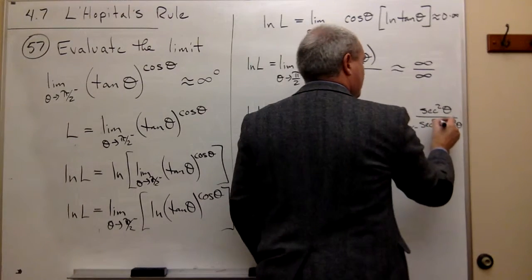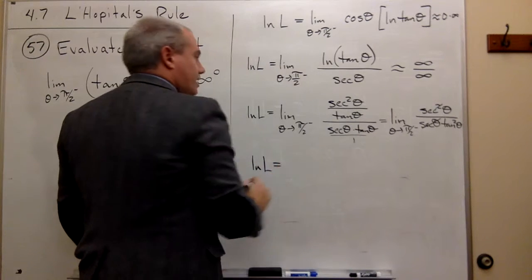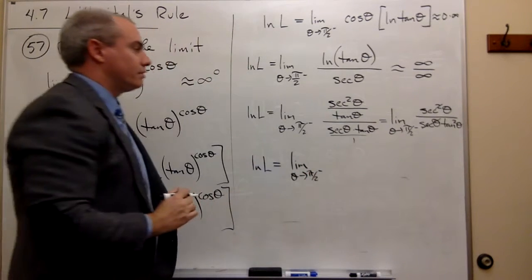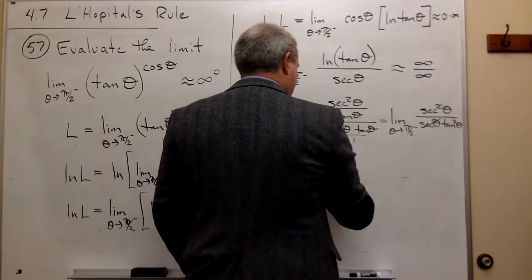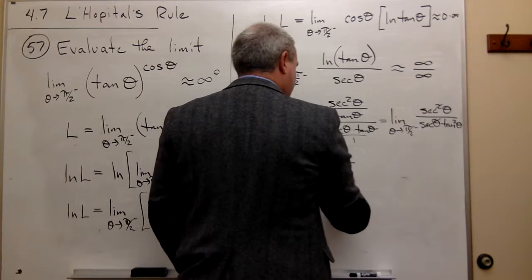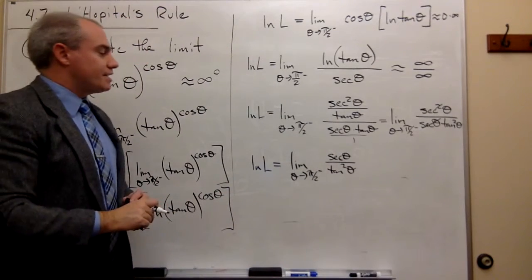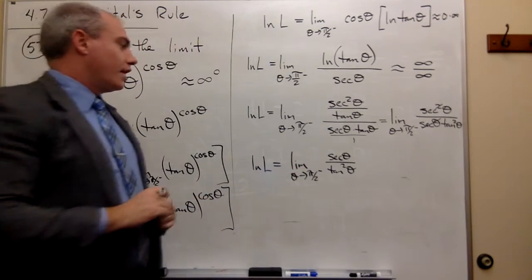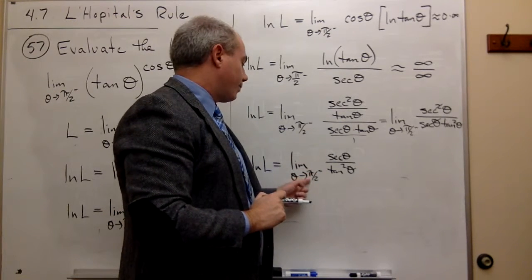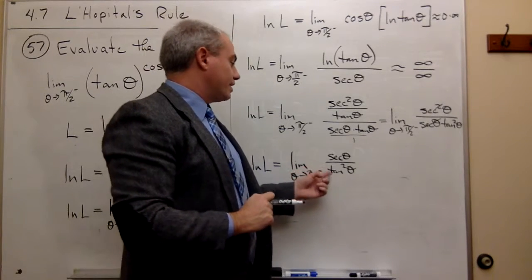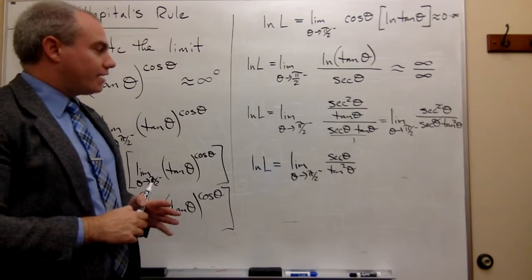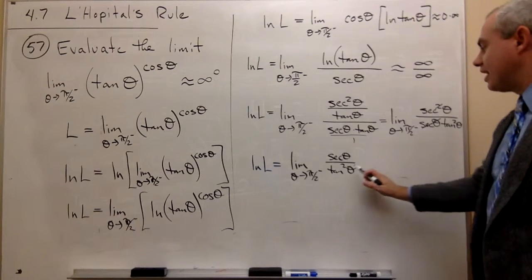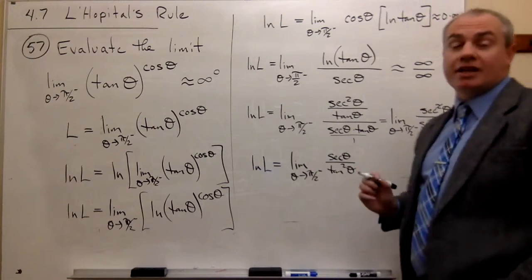A secant of theta cancels, and I'm left with ln of L equals the limit as theta goes to pi over 2 from the left of secant of theta on top and tangent squared of theta on the bottom. Plugging in pi over 2 gives infinity over infinity again. But I can simplify by converting to sines and cosines: secant is 1 over cosine theta, and tangent squared flipped gives cosine squared over sine squared. One cosine cancels, leaving cosine of theta on top and sine squared of theta on the bottom.